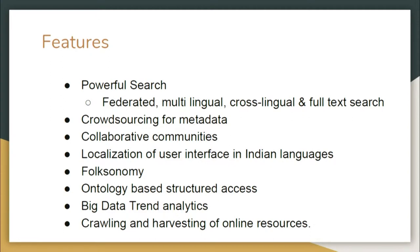Folksonomy is about creating or organizing content as per the user — it is user-generated classification of content. Then there is ontology, big data trend analysis, and crawling and harvesting of online resources. Crawling is downloading or extracting bulk data from the web. Harvesting is similar but they are two different processes — the idea is the same: we need to download bulk content. In crawling we deal with huge datasets and can collect data from different online resources.